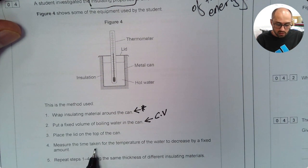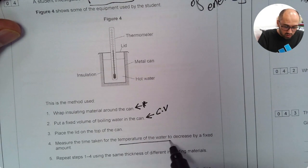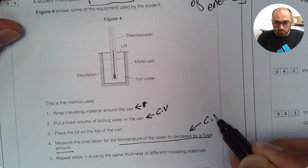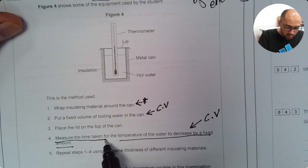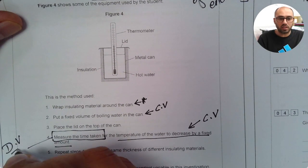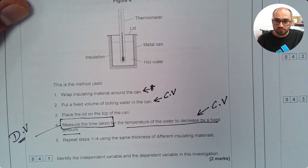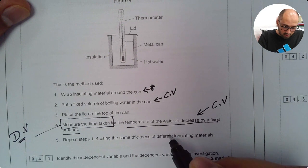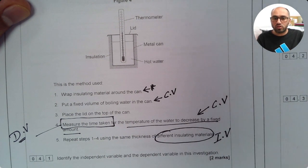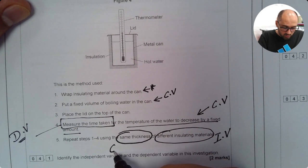Measure the time taken for the temperature of the water to decrease by a fixed amount. Temperature of water decreased by fixed amount is again my control variable. It says measure the time taken - this is my dependent variable because I'm going to measure it. Then it says repeat step 1 to 4 using same thickness of different insulating material. This is my independent variable because I'm going to change it. And same thickness is again my control variable.